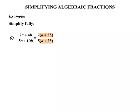Now, if we consider the a plus 2b's, they're common to both top and bottom. So they're a common factor, so they can cancel each other out. And in this case we're left with 2 fifths. So we've simplified that fully, it's came up as 2 fifths.